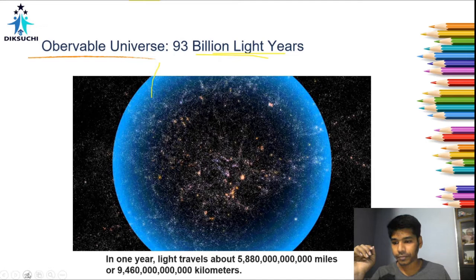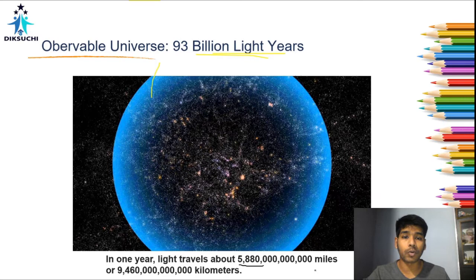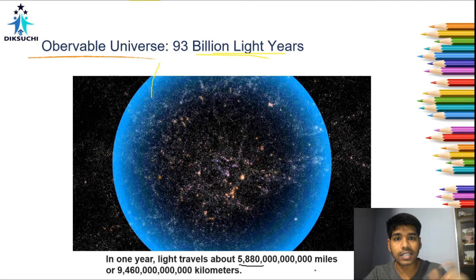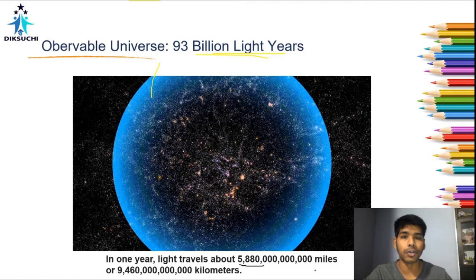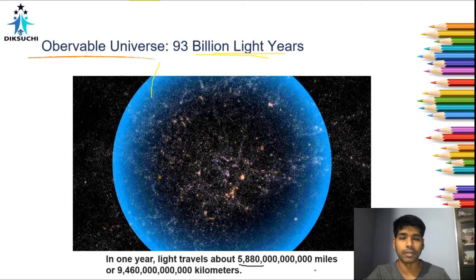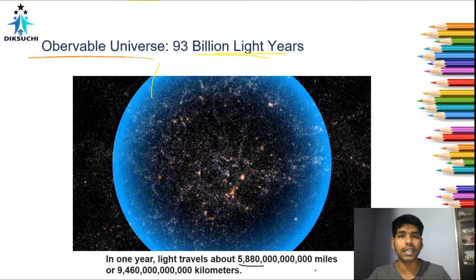One light year is equal to 5.8 × 10¹² miles. A light year is defined as the distance light travels in one year. The speed of light is 3 × 10⁸ meters per second. The observable universe is 93 billion light years in diameter, while our Milky Way galaxy is one lakh light years wide. We measure cosmic distances in light years.